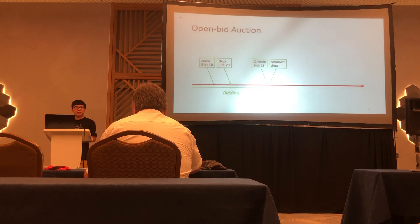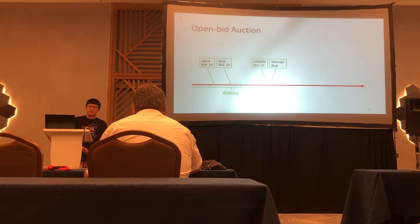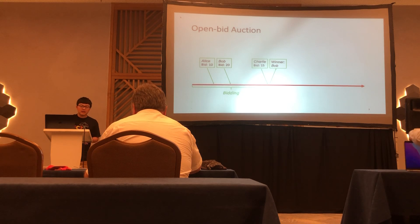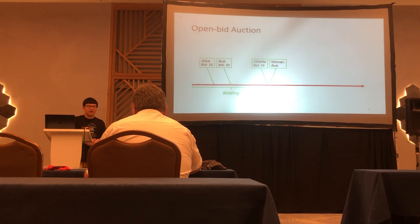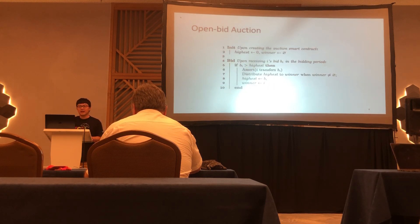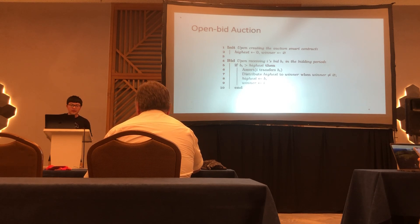First, we can see an example of an open bid auction. Open bid auction means that every bid is open, so you can see everyone's bid during the bidding period. In this example, Alice wants to bid 10, Bob wants to bid 20, and Charlie wants to bid 15. So we can see that the winner is Bob in this example. We can implement this open bid auction on a blockchain in a very simple way.